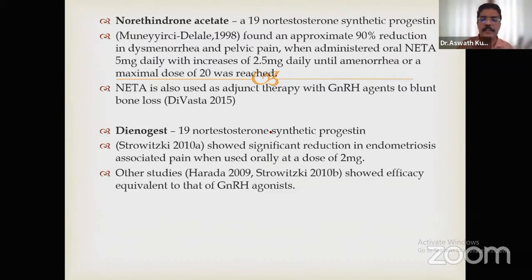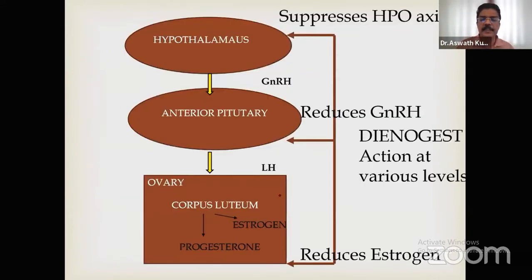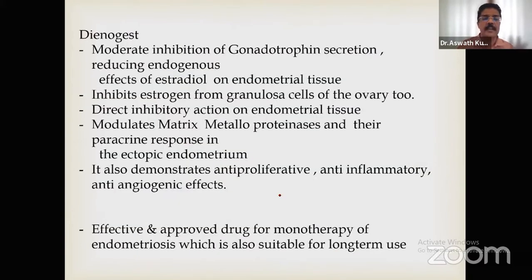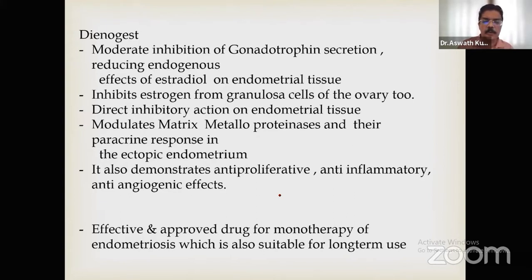Dienogest is one of our favorite drugs. Given at 2 mg daily, it has shown significant reduction in endometriosis pain, and studies show it is as efficient as GnRH agonists. It acts on the hypothalamic-pituitary-ovarian axis, suppressing GnRH and gonadotropin levels. It also has direct inhibition on endometrial tissue, modulates matrix metalloproteinases, has a paracrine response in ectopic endometrium, and demonstrates anti-proliferative and anti-angiogenic effects. Long-term use studies of up to five years are available without major complications.